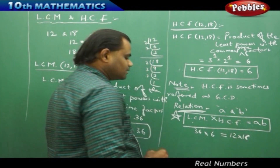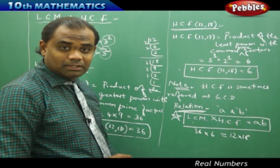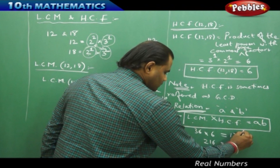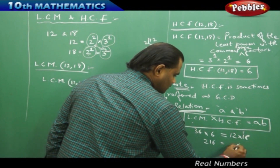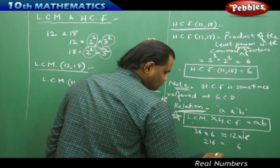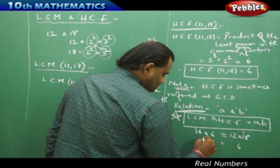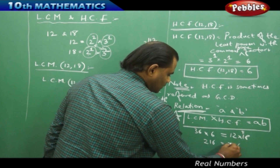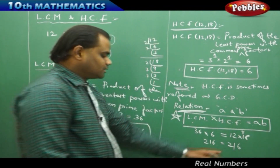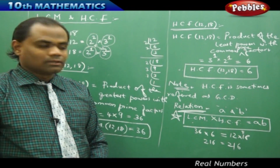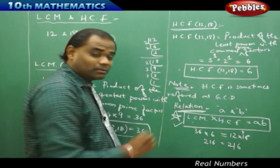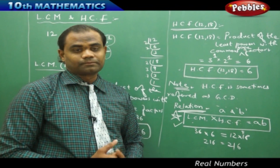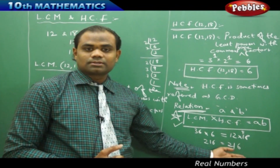As we can clearly see, 36 multiplied with 6 is 216, and 12 times 18 is also 216, which is clearly true. Therefore this formula holds true for any two numbers taken into consideration, and this supports the statement.